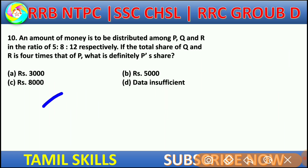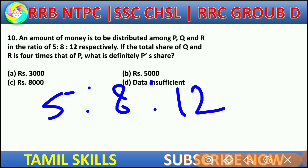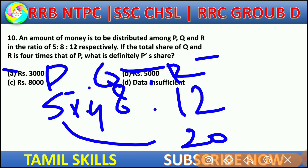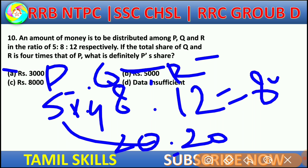We check with p, q, r in ratio 3 to 5, 8 to 12. Casting this ratio: P is 20. But the exact value cannot be determined from this information alone. Without one fixed data point you cannot find individual values. So the answer is: data insufficient.